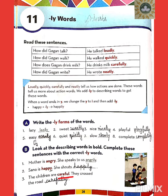Number 3: The children are careful. The word is careful — since it ends in L, we add L-Y, giving a double L. The new sentence is: they crossed the road carefully, C-A-R-E-F-U-L-L-Y.